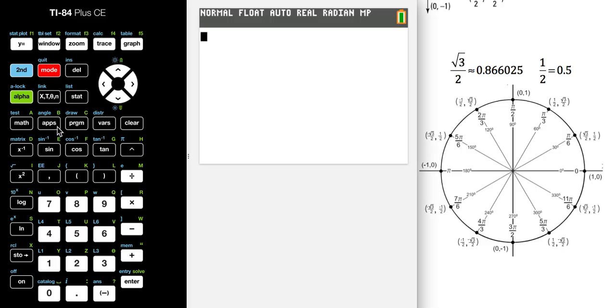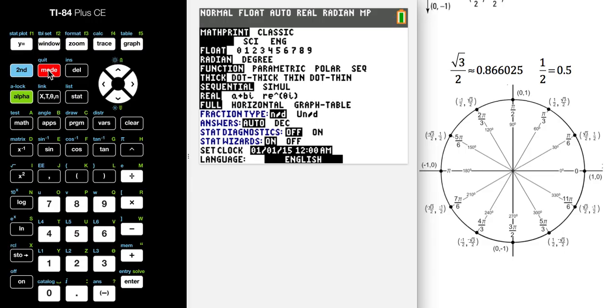So if we come over here to our graphing calculator, first thing we need to do is make sure that it is set in the right mode. You're going to come to your mode and scroll down to where you've got a choice between radian and degree, and you're going to select degree because these are degree modes.